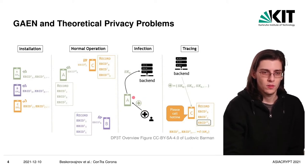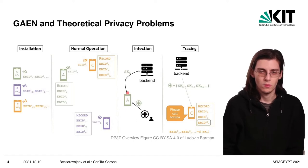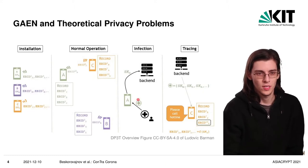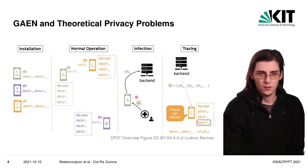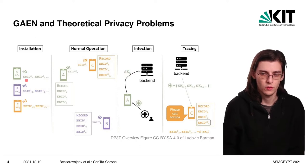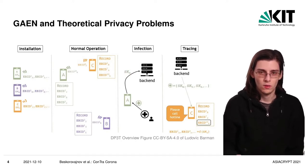When later on a participant gets infected and they are tested, so the infection is detected, they receive some kind of information like a transaction number and then they upload their secret key that they use to derive the short-term identifiers.